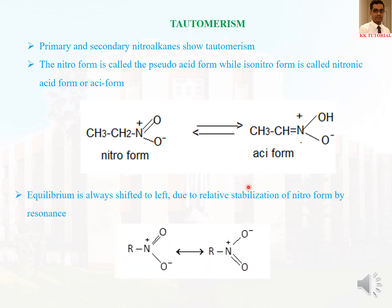The nitro form is always the more stable form, because it has two resonating structures providing resonance stabilization. Therefore the equilibrium is always shifted to the left — towards the nitro form. Of these two tautomeric forms, nitro form is more stable, so the equilibrium is shifted towards the nitro form. In summary, nitroalkanes exhibit tautomerism, existing as two tautomers — the nitro form and the aci form — with equilibrium favoring the resonance-stabilized nitro form.